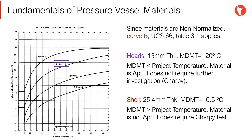Since the materials are non-normalized, Curve B as per the indicated in UCS-66 should be used. For the case of the heads, with a 13 mm thickness and crossing Curve B, we obtain an MDMT of minus 20 degrees Celsius. Since the MDMT is less than the project temperature, the material is apt and does not require any further investigation.